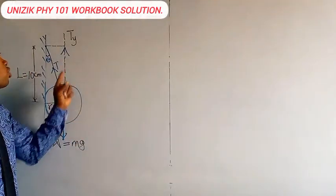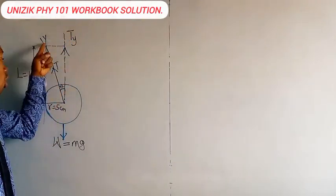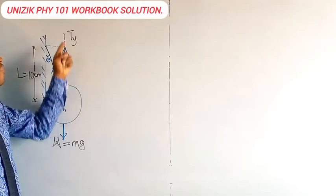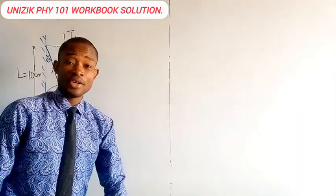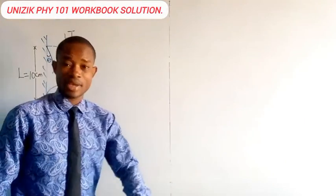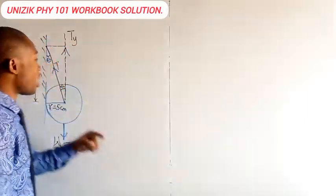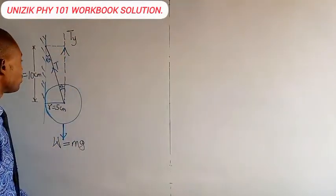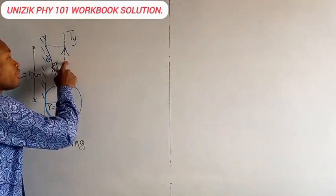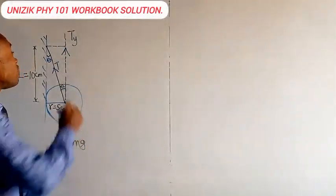That theta is very important to us. It's very important because that is what we are going to use in getting the vertical component of this tension. And it is only the vertical component of the tension that is equal to the weight of the sphere. Because the sphere, the weight of the sphere is pulling down straight, perpendicular. So it must balance the normal component of the tension, that is the tension acting vertically up. So I need this guy, very important. And how do I get the value of that TY?